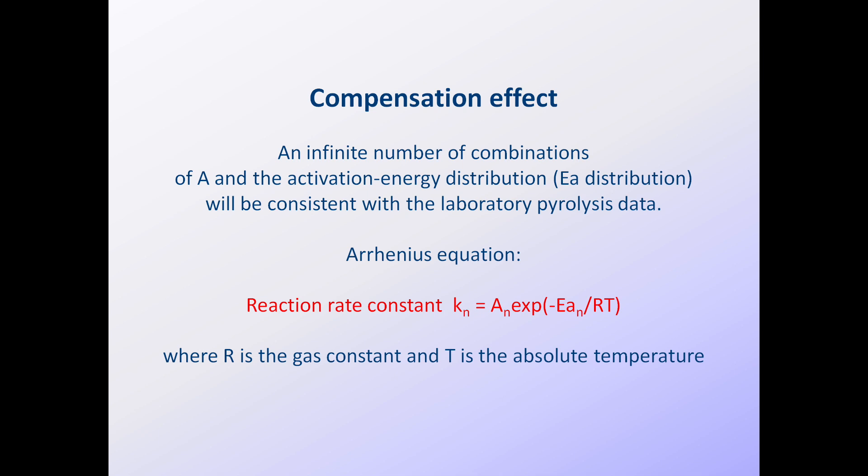The compensation effect creates problems for us in deriving kinetics, but it turns out to be a useful tool for converting one A-factor to another. For each activation energy, Ea, in the activation energy distribution, there's a reaction rate constant, k, whose value is calculated using the Arrhenius equation shown here. R is a constant, and T is the absolute reaction temperature in Kelvin, not Celsius.